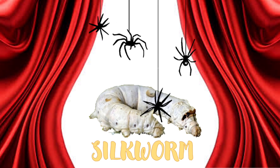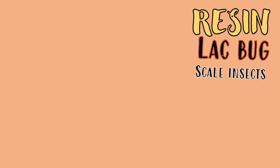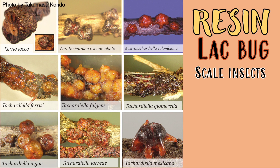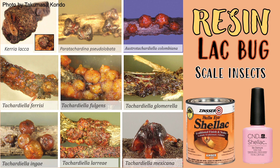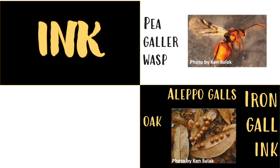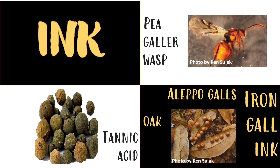We also have silk from silkworms and spiders. Resins from lac bugs, a type of scale insect — the most common species of lac bug producing resin is the Kerria lacca, but there are other species of lac bug that produce resin. The most common product from lac bug resins is shellac, which can be used as a finish or in nail polish. Ink, or the iron gall ink, came from the Aleppo galls produced by oaks in response to a chemical substance secreted by a pea galler wasp larvae. The tannin extracted from the Aleppo galls is combined with iron salts to produce the ink.